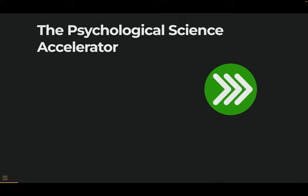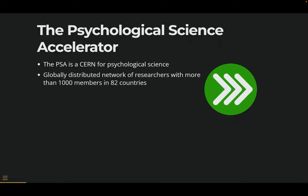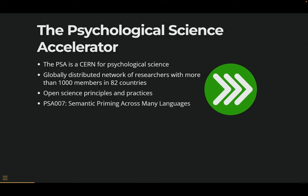It's a CERN for Psychological Science where we have a globally distributed network of researchers with more than 1,000 members across 82 plus countries. It's a group of people who work on big team science projects using open science principles and practices. Specifically this project — I don't know how I got lucky, I'm 007 — everybody calls it the SPAM because it's the SPAMO.